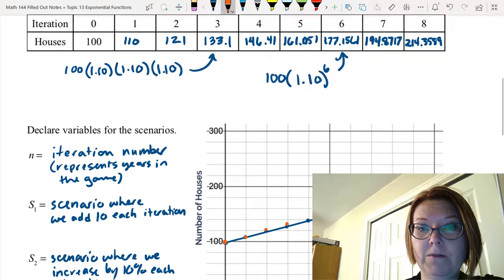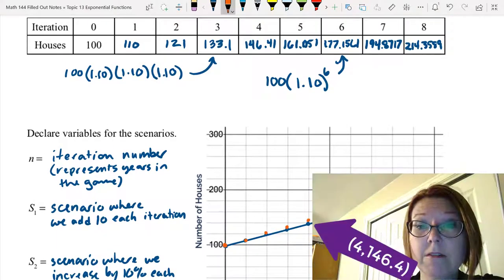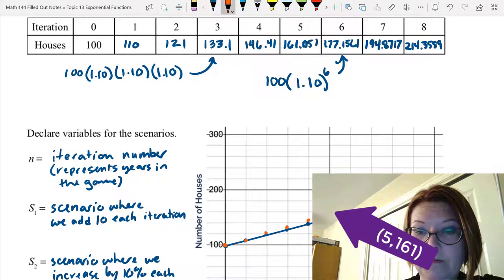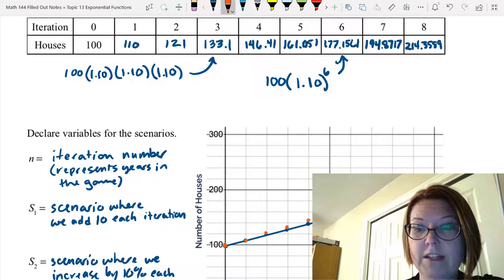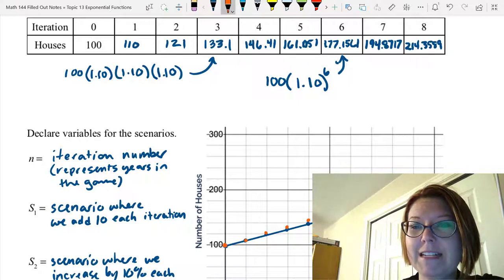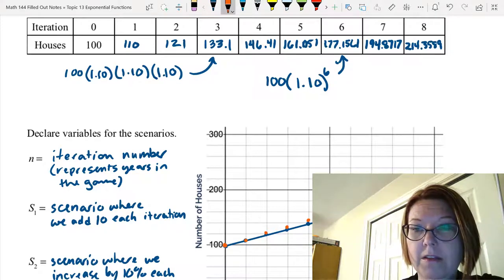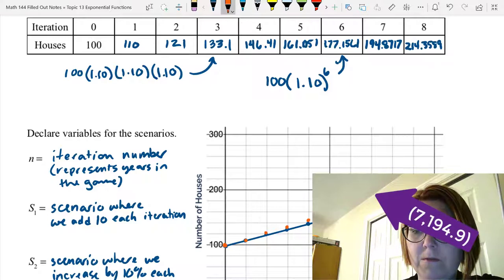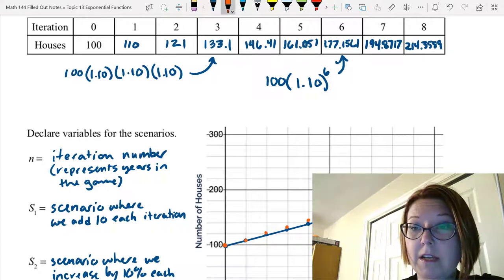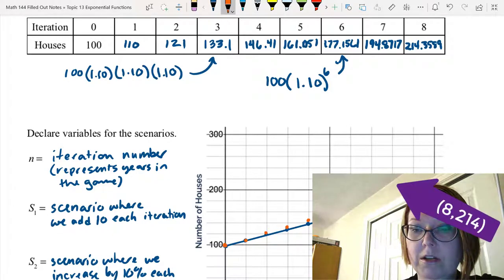4 is 146. 5 is 161, starting to diverge from the other line now. 6 is 177. 7 is 194. And 8 is 214.